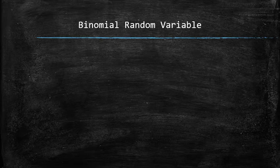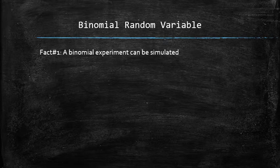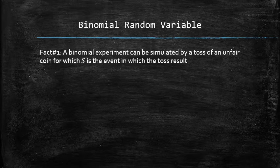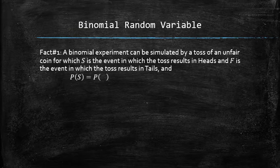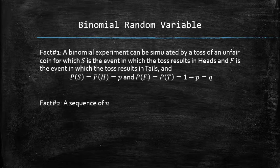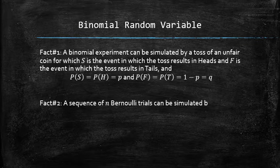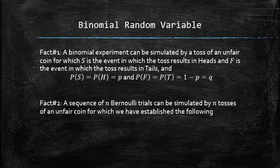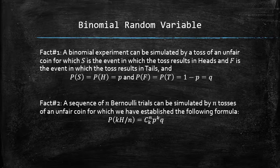Next, we establish two facts. Fact one: a binomial experiment can be simulated by a toss of an unfair coin, where S is the event of heads and F is the event of tails, with the probability of success labeled P and the probability of failure labeled Q. Fact two: a sequence of N Bernoulli trials can be simulated by N tosses of an unfair coin, using the established formula for finding the probability of K heads among N tosses.